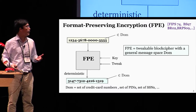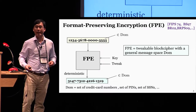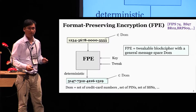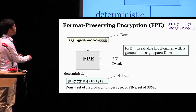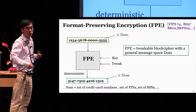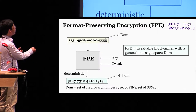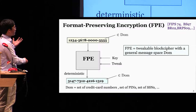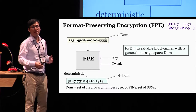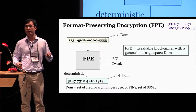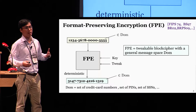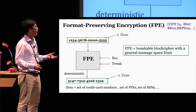Definitionally, FPE is just a tweakable block cipher with a general message space DOM. In particular, an FPE scheme takes as input a key and a tweak to map a message in the domain DOM to a ciphertext within the same domain. This mapping is deterministic, meaning that under the same key and tweak, if you keep encrypting the same message, you would end up with the same ciphertext.